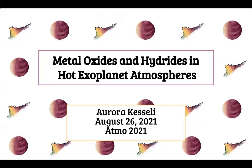As a quick introduction: a metal oxide is a molecule with one metal — maybe iron, magnesium, something like that — plus an oxygen atom. A metal hydride is the same but with a hydrogen atom. I'm a postdoc at Leiden Observatory.